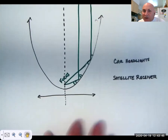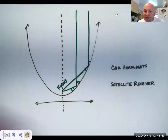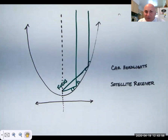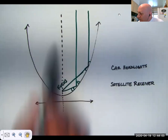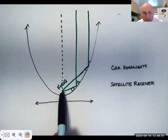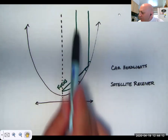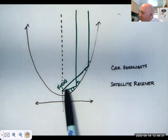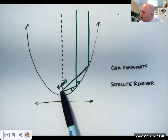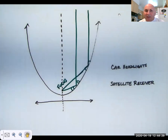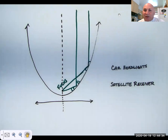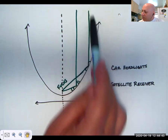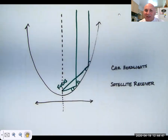Parabolas have some nifty qualities. Everything that comes into a parabola parallel to the center line — called the axis of symmetry — the focus is always, always, always on the axis of symmetry. Anything that comes in to the parabola parallel to that line will bounce off. This angle is equal to this angle, and it will be reflected to the focus. If you have a satellite receiver for television, that's where you put the actual receiver, because all the radio waves come in and are reflected to this one point.